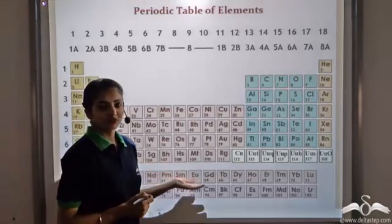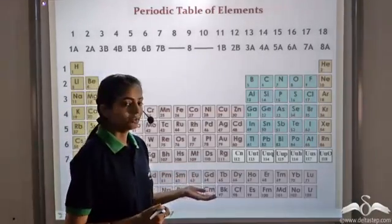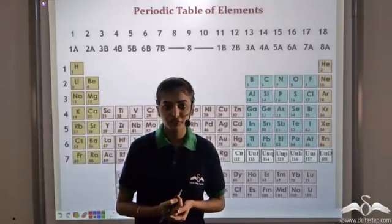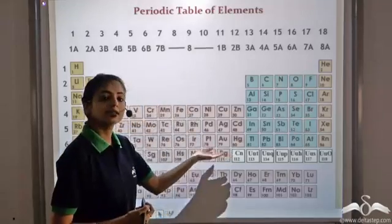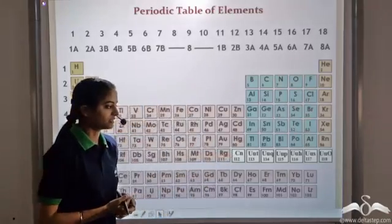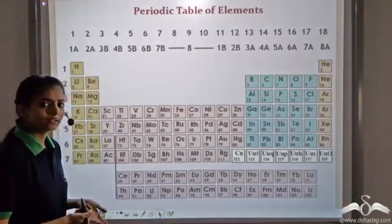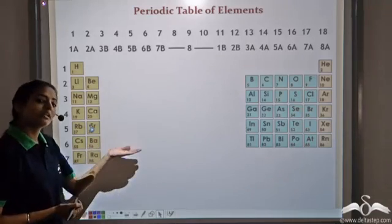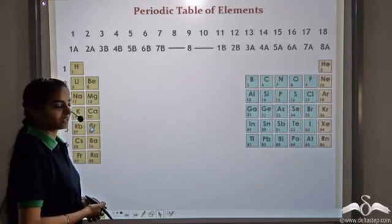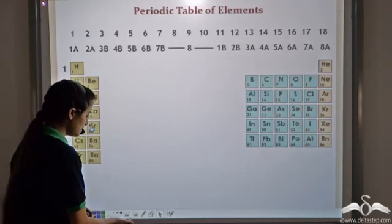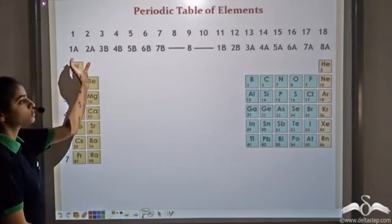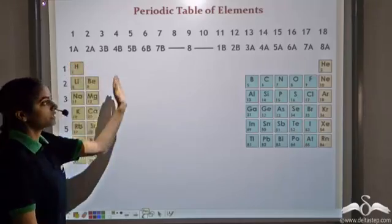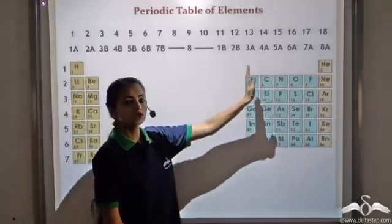This is the modern periodic table, the present accepted form of the periodic table, which includes 118 elements. Right now we'll deal with only this part of the periodic table — the elements belonging to groups 1A, 2A, and 3A.